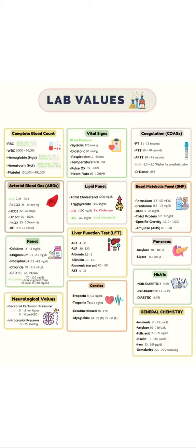Neurological values: CPP and ICP. Vital signs — these are ideal values and normal ranges — including blood pressure, respiration, temperature, pulse, and heart rate.